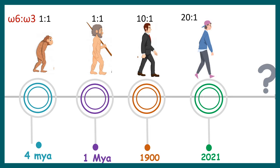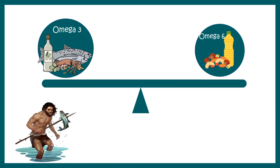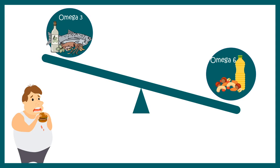This can be understood from an evolutionary perspective. About 4 million years ago, primitive humans had a diet where omega-6 to omega-3 was in a 1:1 proportion. But as time has progressed, in the modern western diet, omega-6 to omega-3 has become 20:1. So the balance has tipped heavily towards omega-6, and we consume very little omega-3 in our diet.